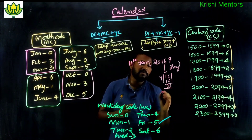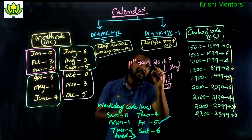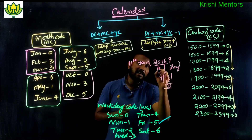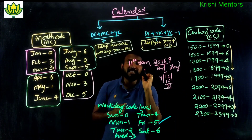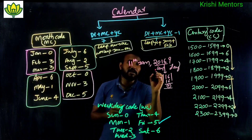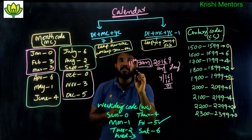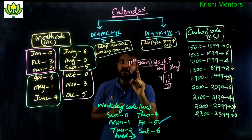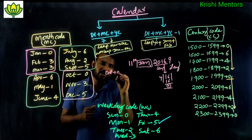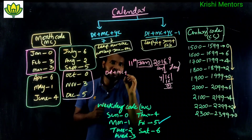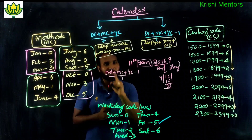Since 16 divides exactly by 4, 2016 is a leap year. And the month is January in a leap year, so we use the adjusted formula: Date plus month code plus year code, divided by 7, minus 1.